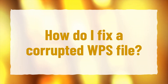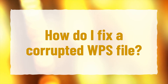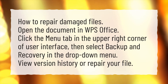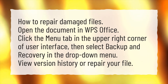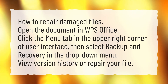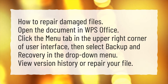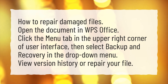How do I fix a corrupted WPS file? To repair damaged files, open the document in WPS Office. Click the Menu tab in the upper right corner of the User Interface, then select Backup and Recovery in the drop-down menu. View Version History or Repair Your File.